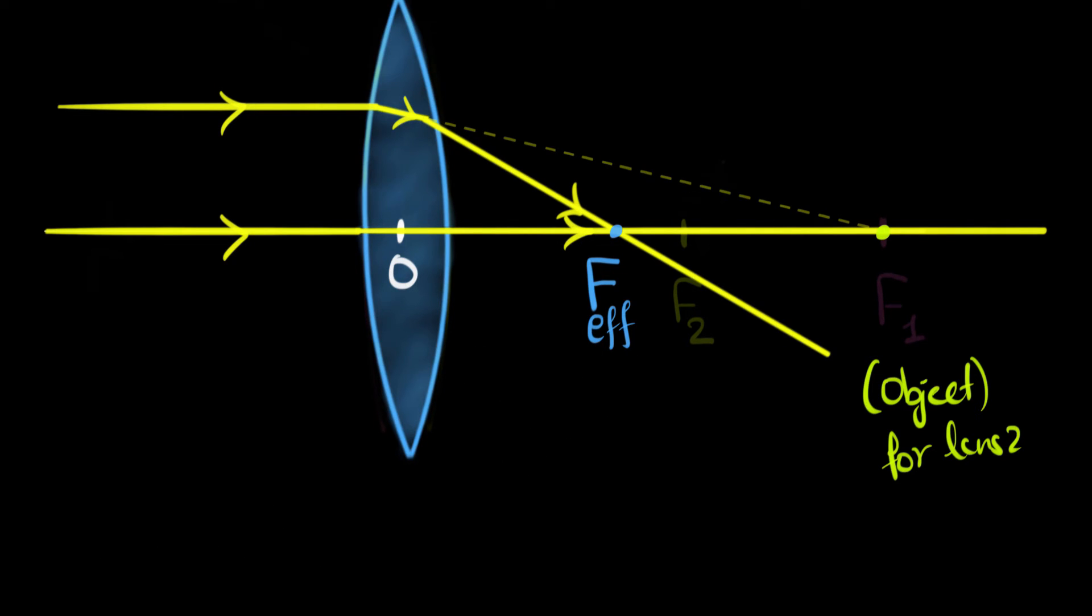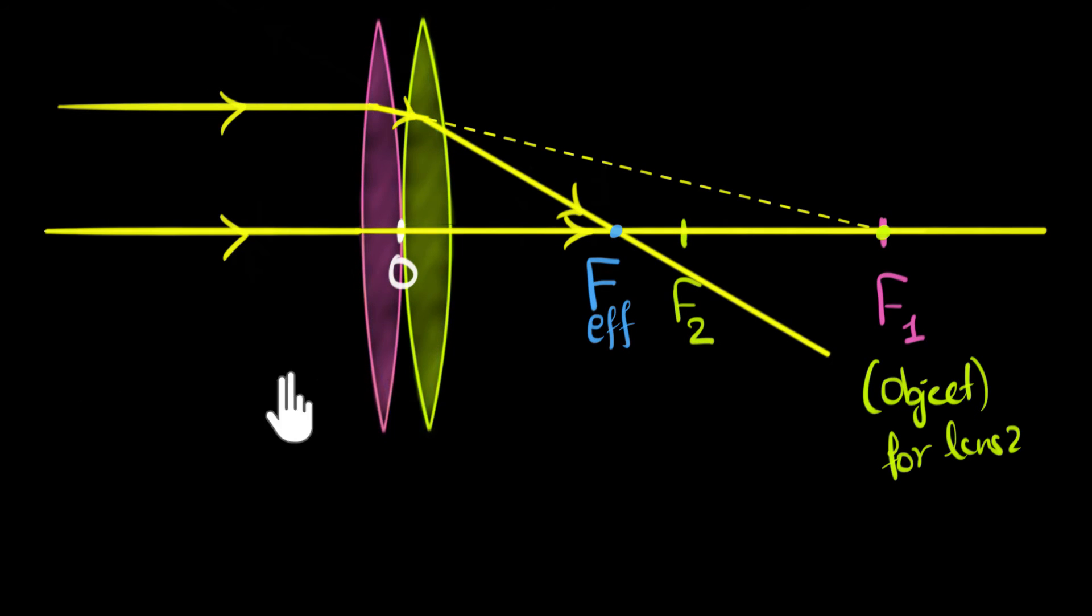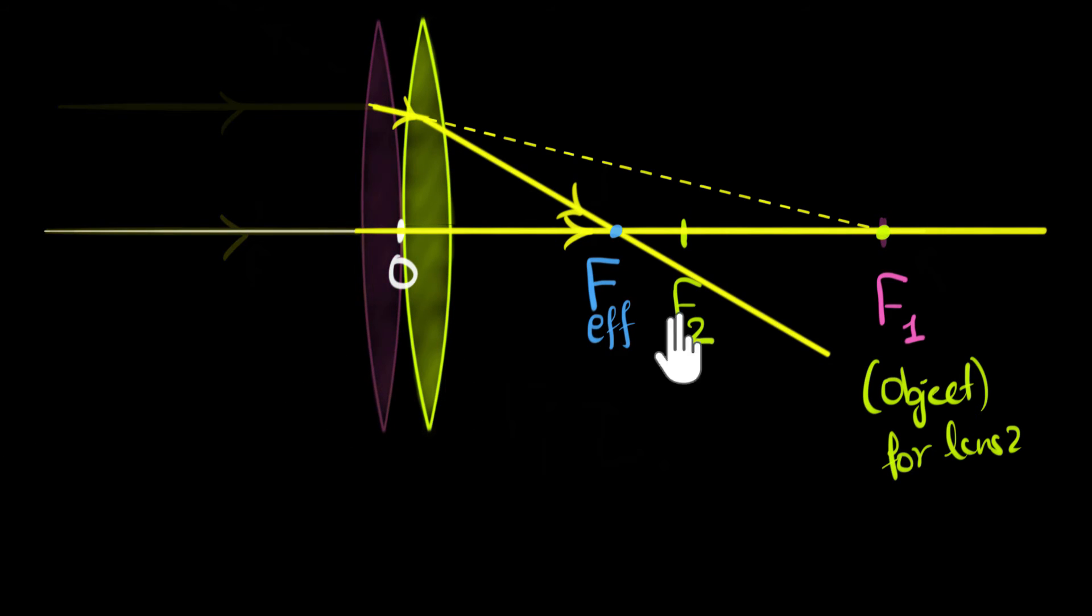So again, if you bring back the two lenses, how do we figure out this length? Well, if you look at the second lens again one more time, just focus on that second lens. We've already seen that this is the object for the second lens because that's where the incident rays of light on this lens appear to meet. Then after refraction, the rays of light meet over here. That means this is the image for our second lens. So this would be image for lens two.